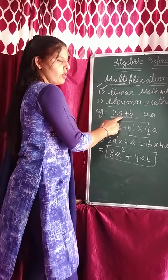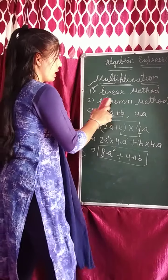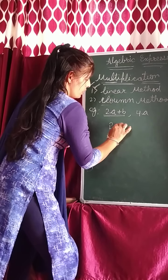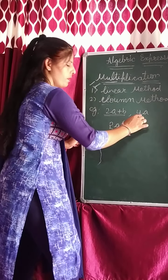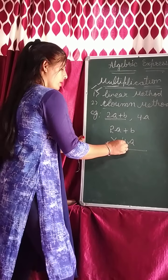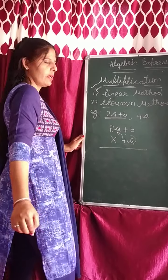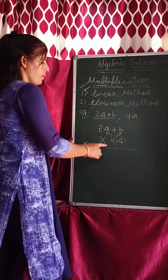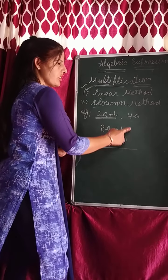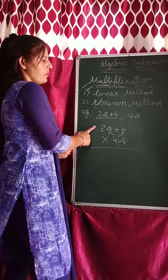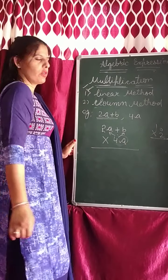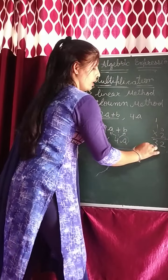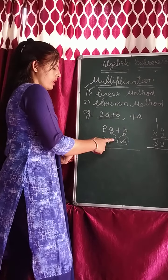Now using the column method, how will we solve this same sum? Write the statement as it is. Now in algebra, when you solve a sum, you always start from the front — you don't start from the back like in arithmetic. For example, if you multiply 16 by 2 in arithmetic, you start from the back: 6 times 2 is 12, carry 1, then 1 times 2 plus 1 is 3 — you get 32. But in algebra, it is not like that — in algebra you always start from the front.